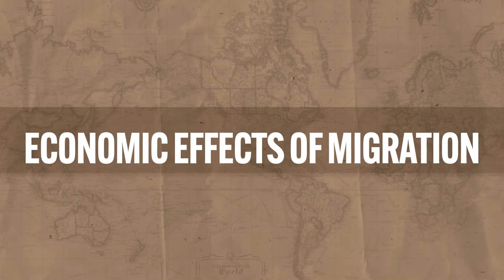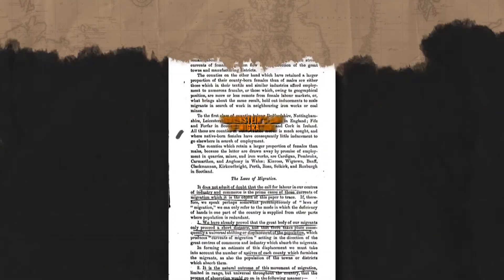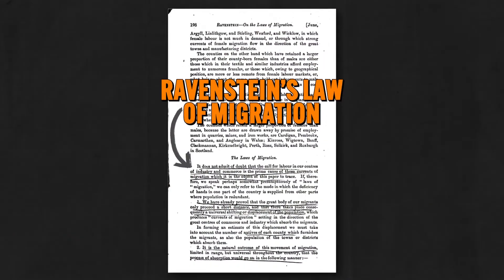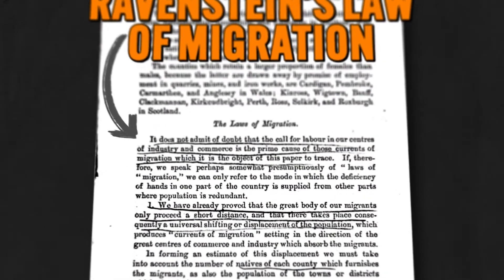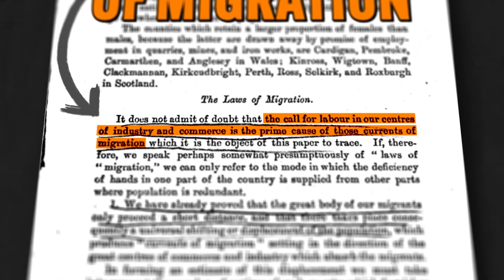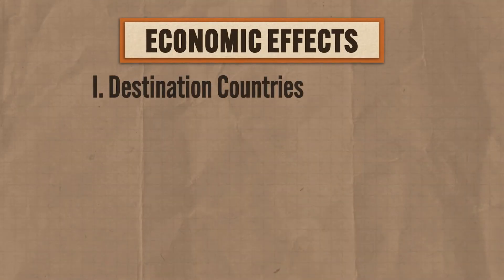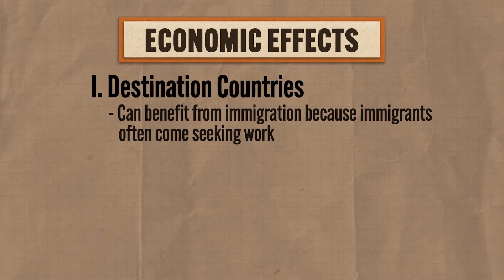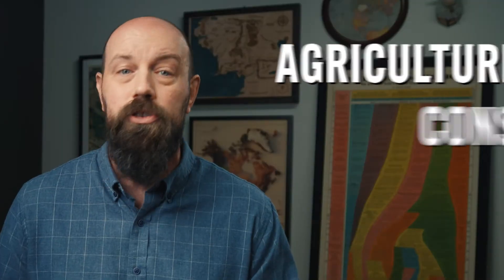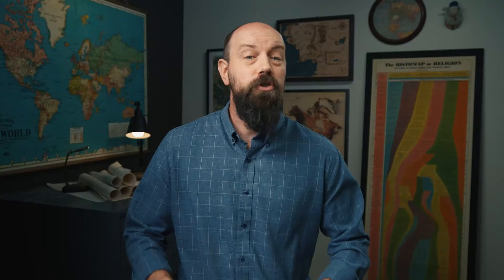Now let's consider the economic effects of migration. The need for work is often one of the chief motivators of migration — Ravenstein even said so in his laws of migration. Destination countries benefit from immigration because immigrants often come seeking work, and they will often accept jobs at lower wages in sectors that native-born people are less willing to hold, with agriculture and construction being significant examples today.